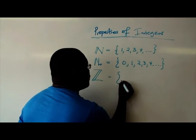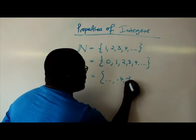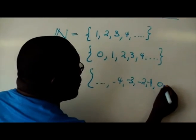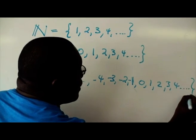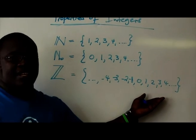So it will be equal to negative 4, negative 3, negative 2, negative 1, 0, 1, 2, 3, 4, and so on. If you do this, then you have denoted the integers.